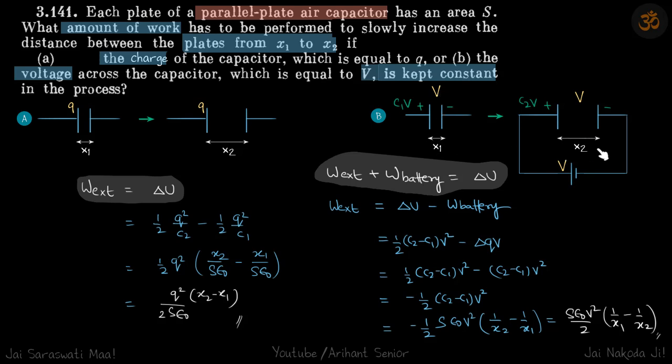Here the charge is constant, so this is an open circuit. Here the voltage is constant, so there must be a battery which is keeping the voltage constant. We need to find the external work needed to pull these plates apart.